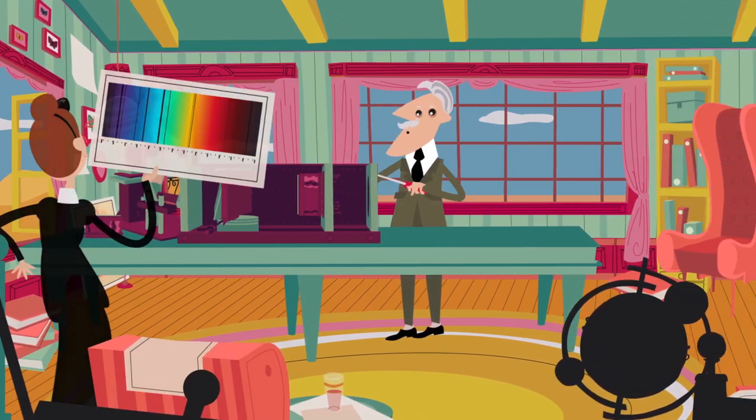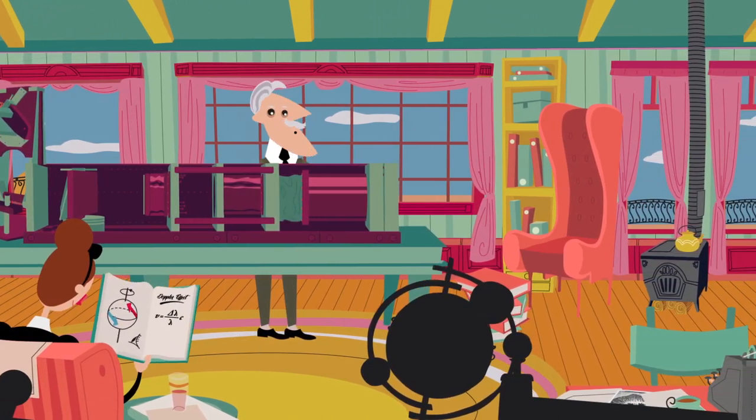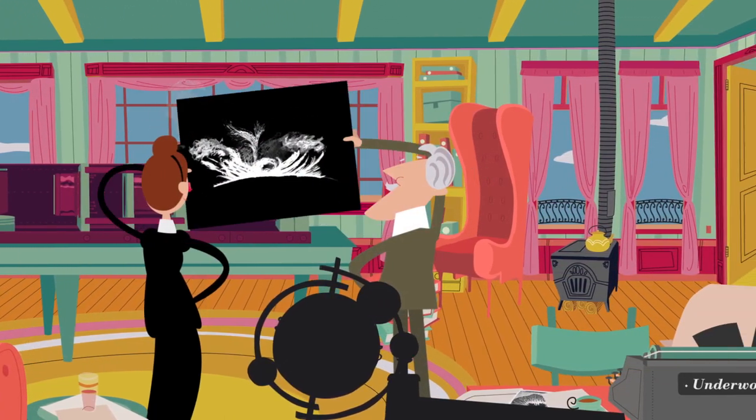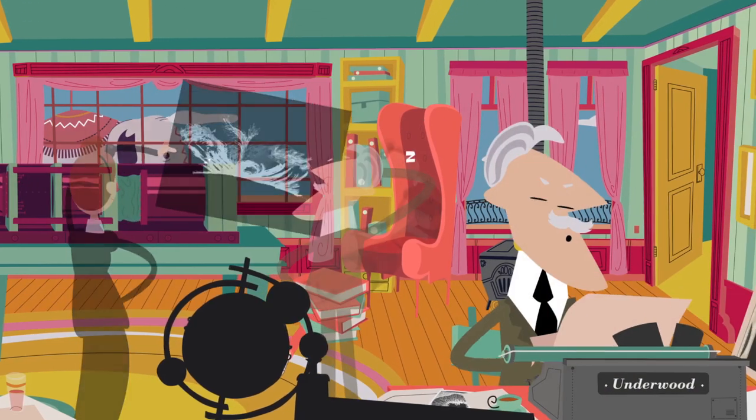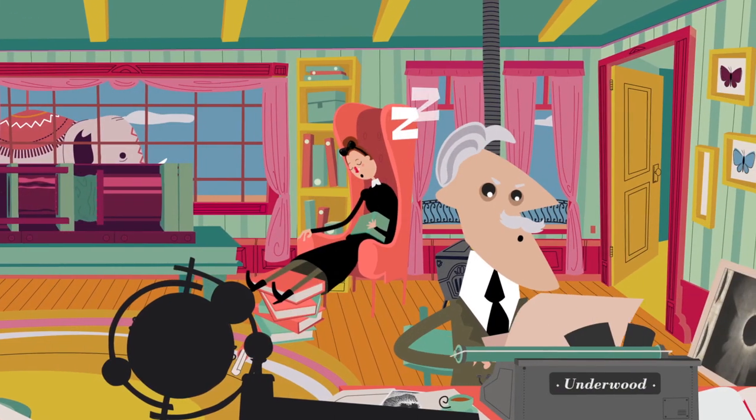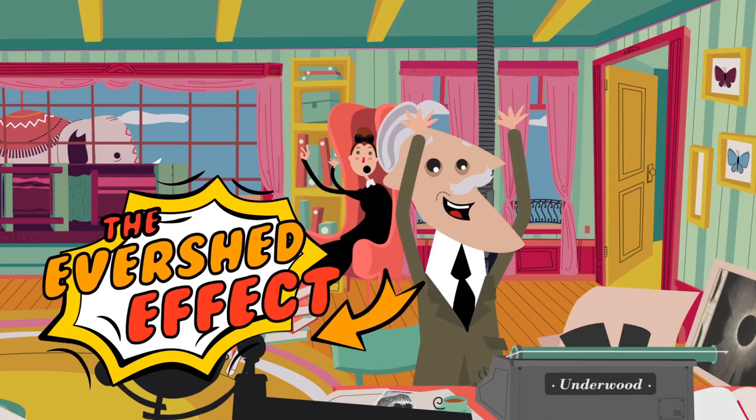The Eversheds were very active studying the sun, in particular sunspots and prominences. But the big achievement of John Evershed's scientific career was the discovery of the Evershed effect.